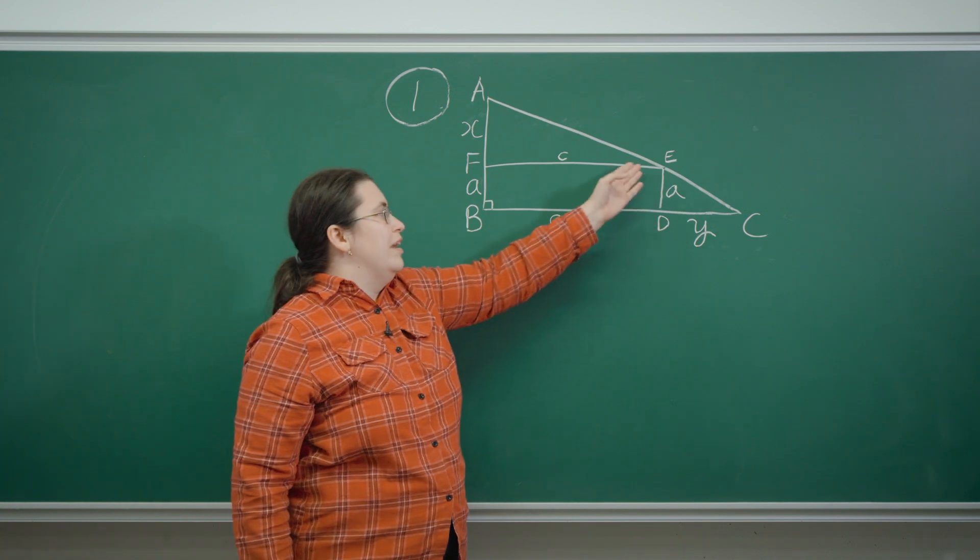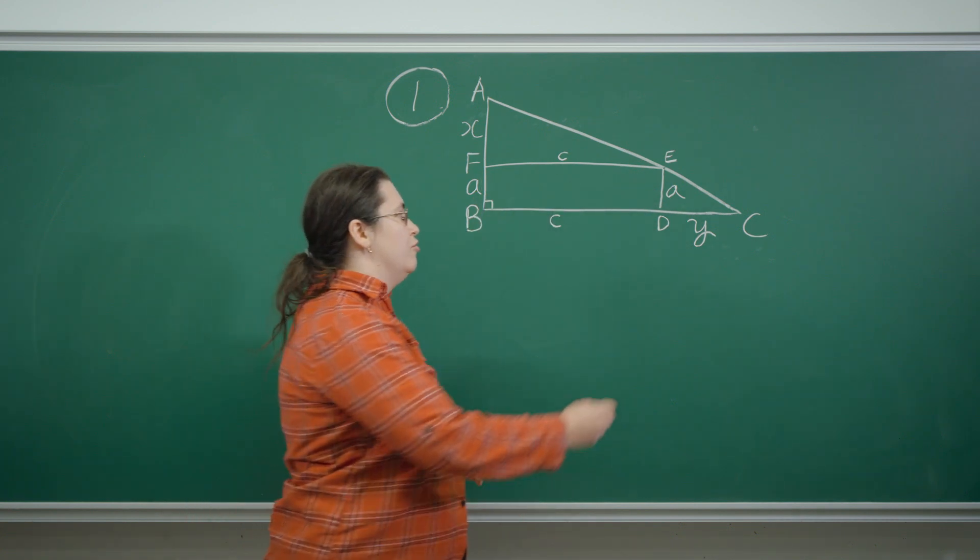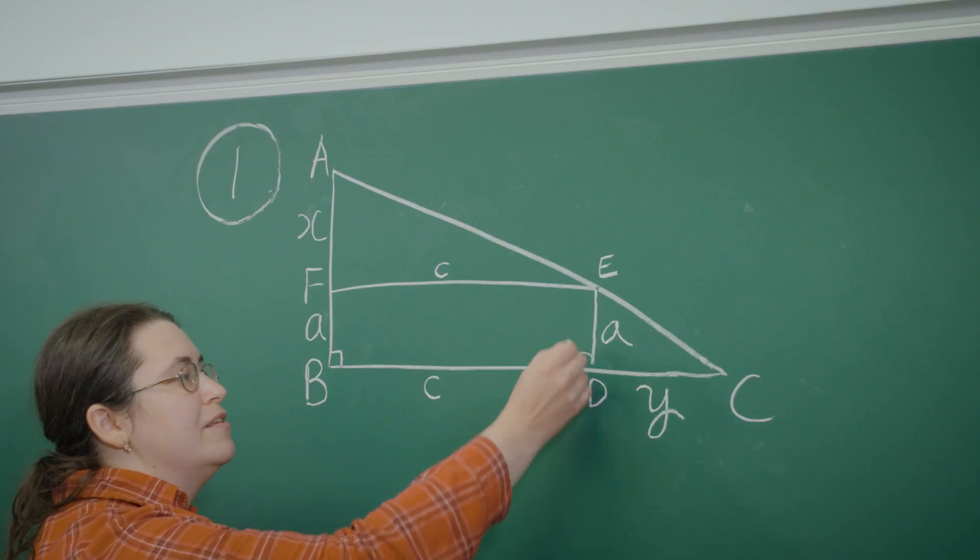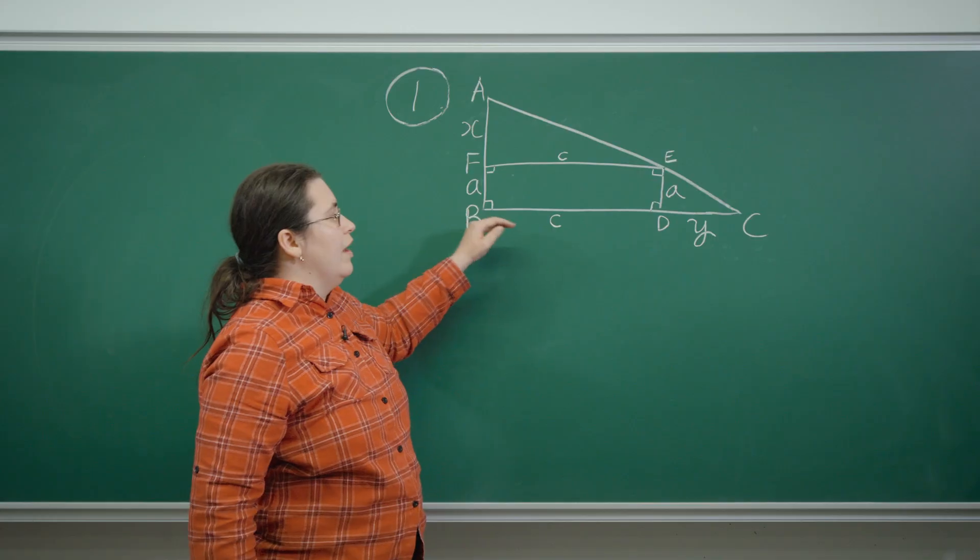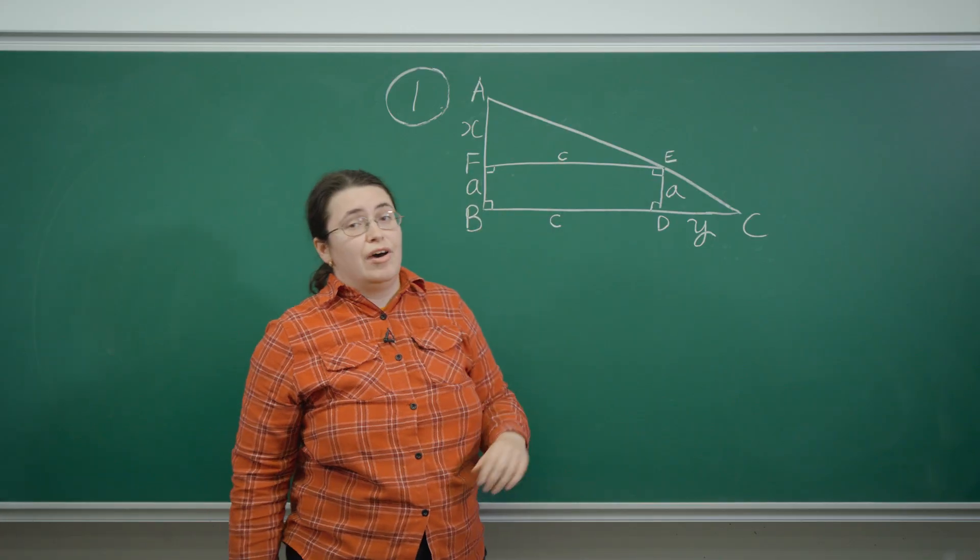Furthermore we know that all the interior angles of the rectangle are 90 degrees and that the sides BD and EF are parallel.